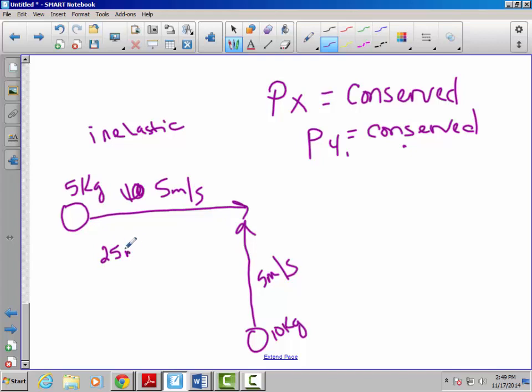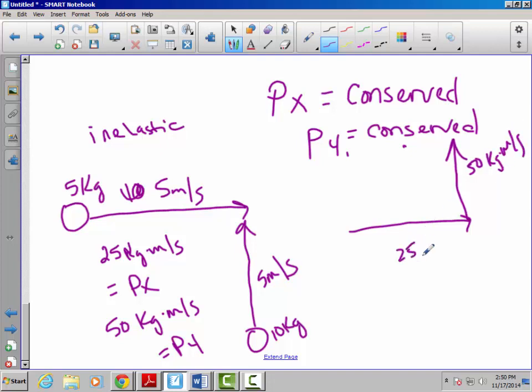So this guy's initial momentum is going to be 25 meters per second, and that's going in the x direction. And then this guy is going to have a momentum of 50 kilograms meters per second, and that's going in the y direction. So y and x still have to be conserved. So that means that after they collide, it's going to be going 25 kilograms meters per second in the x direction for momentum, and it's going to be going 50 kilograms meters per second in the y direction.